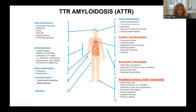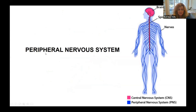When we talk about a neuropathy, we mean the involvement of the peripheral nervous system. We have a brain and spinal cord that make up the central nervous system, and in the vast majority of people this is not involved in TTR amyloidosis. But the peripheral nervous system — the nerves in the arms and legs — is.